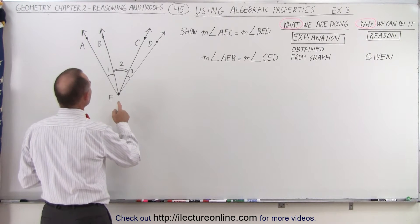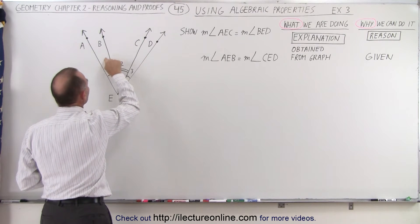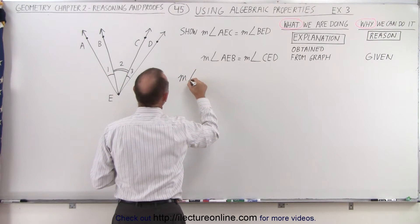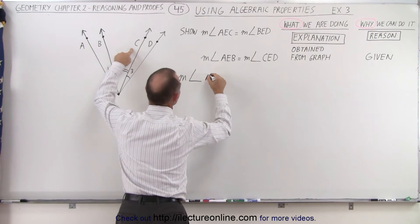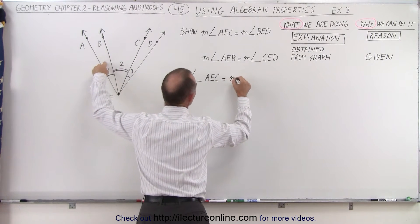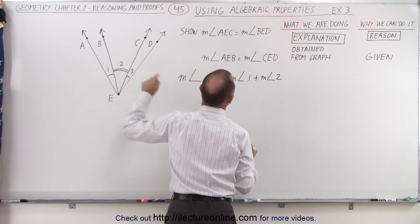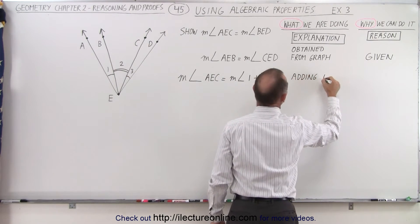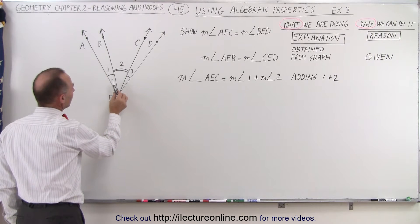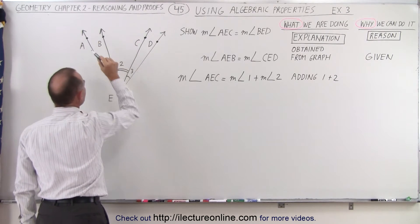The next step: the angle made from A to E to C is simply the sum of angle 1 plus angle 2. So the measure of angle AEC is equal to the measure of angle 1 plus the measure of angle 2. Graphically, if I add angle 1 to angle 2, I get the entire angle defined by angle AEC.